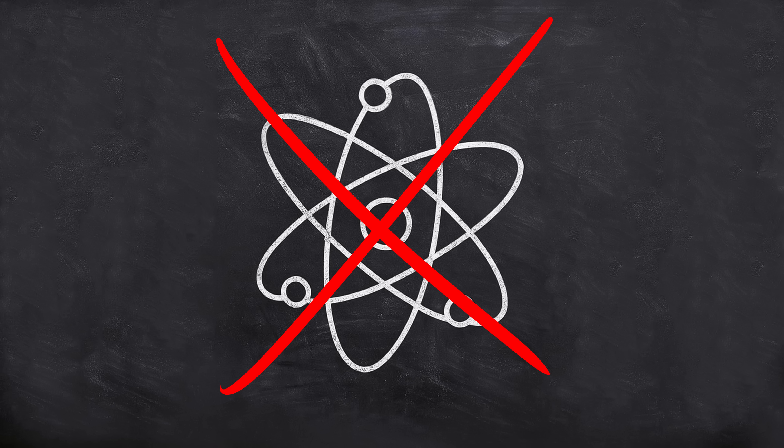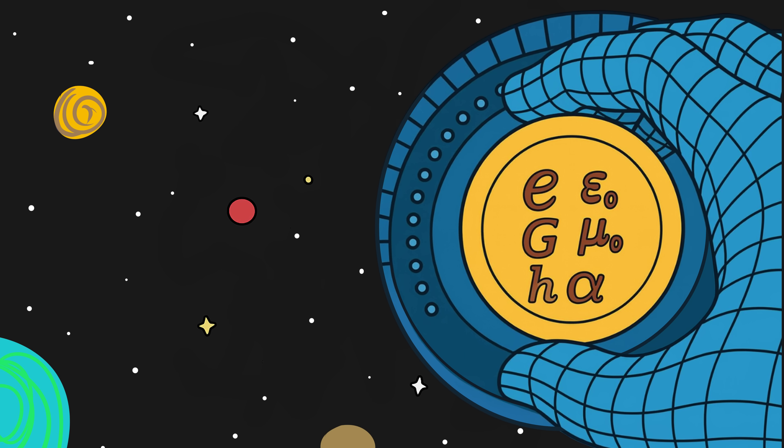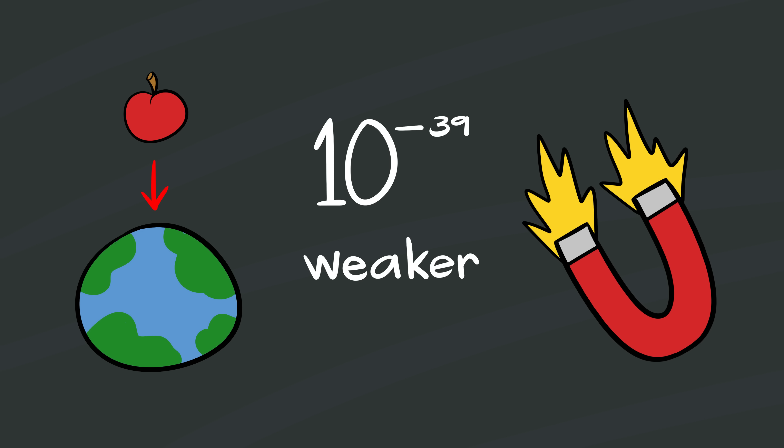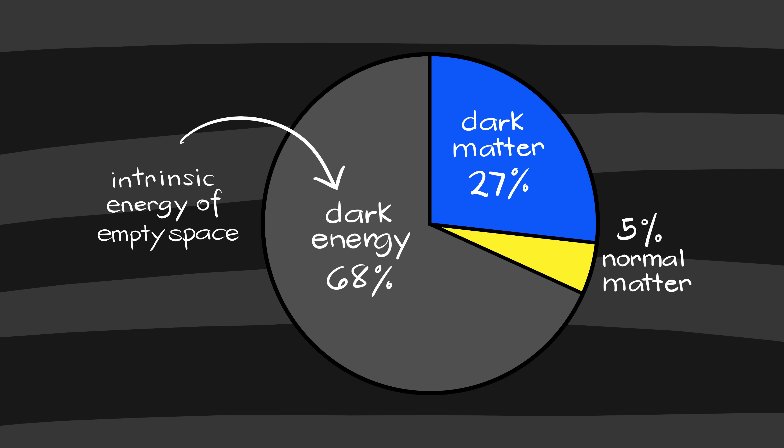Stars wouldn't form, atoms wouldn't hold together, and life wouldn't even exist. The odds of everything being this perfect by chance are so astronomically small that physicists started calling it the fine-tuning problem. Gravity, for instance, is 10 to the negative 39th power times weaker than the electromagnetic force. If it were slightly stronger, the universe would have collapsed into black holes right after the Big Bang. If it were weaker, matter would have never clumped into stars.